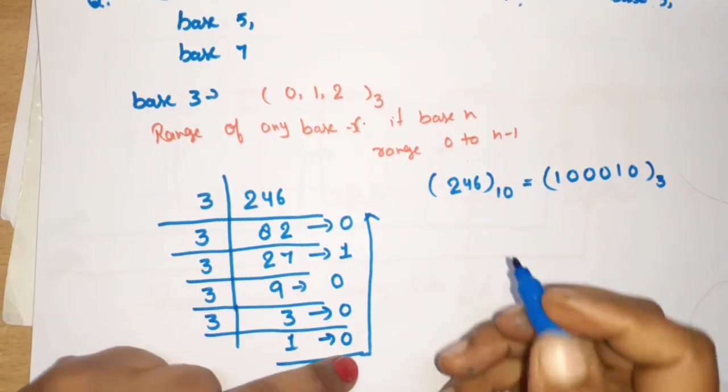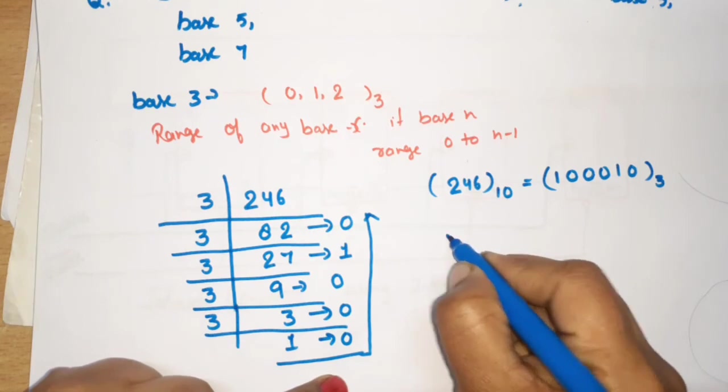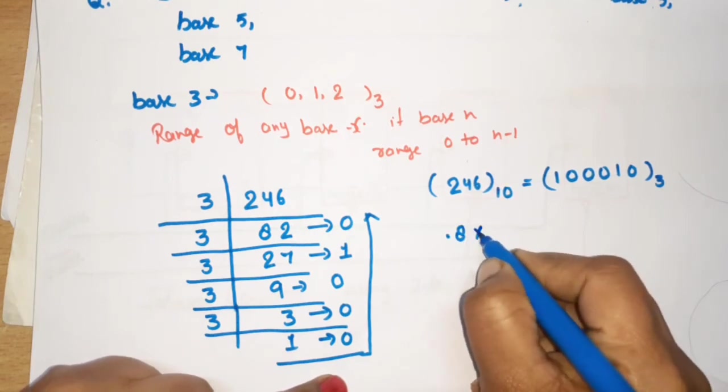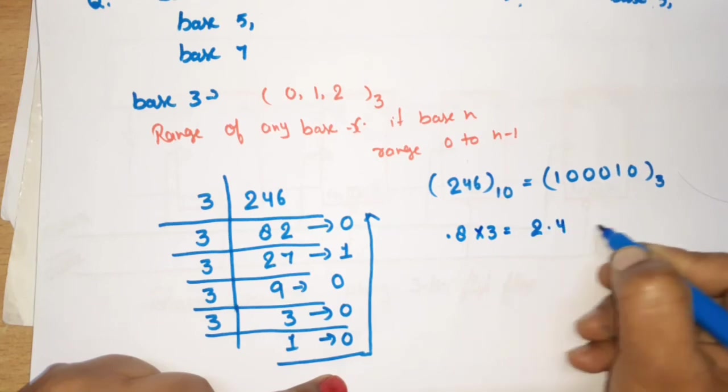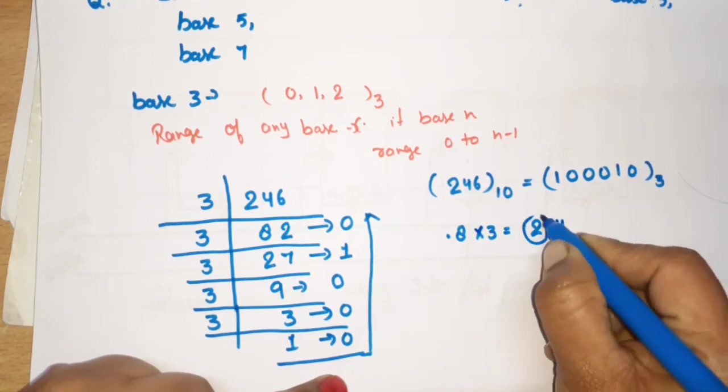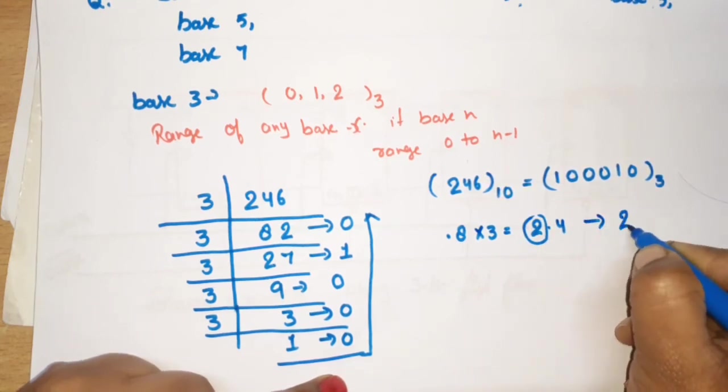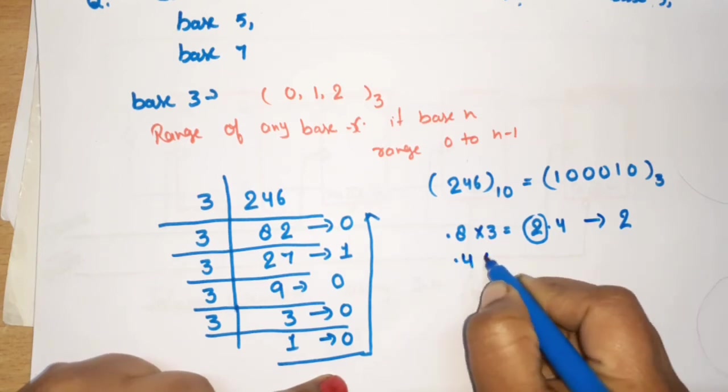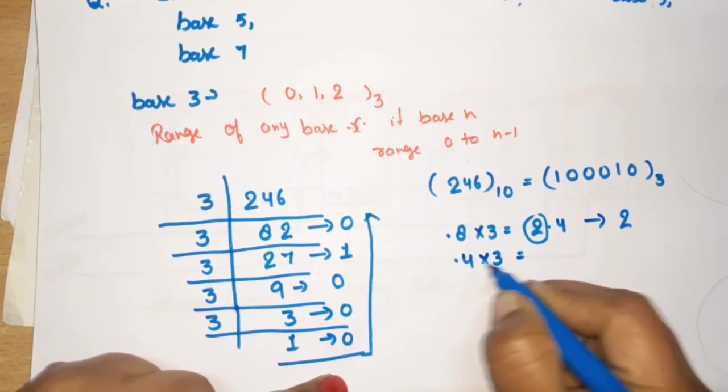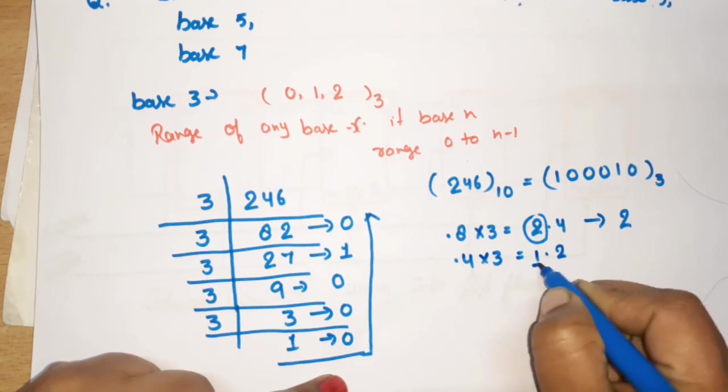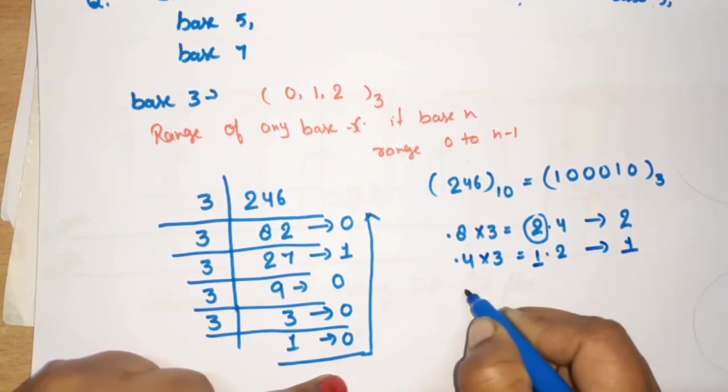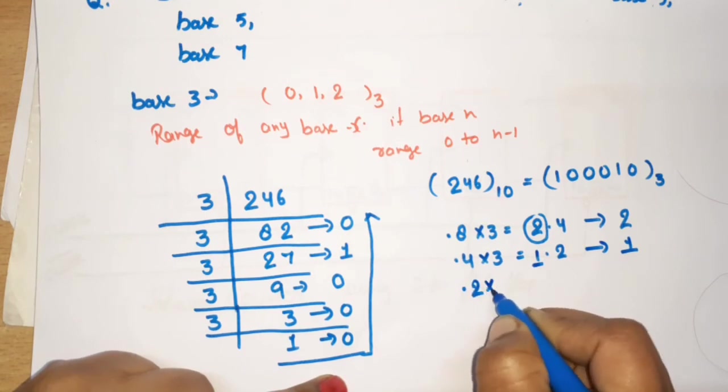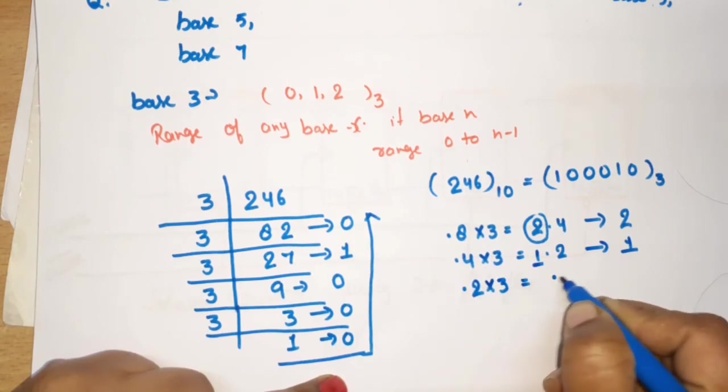Now, friction part. Fraction part is 0.8, so multiplied by 3, what will we write? 2.4. Then 0.4 into 3, multiply by 1.2. This integer part, what will we write? Here, 1. Now what will we write in fraction? 0.2 into 3 is equal to 0.6. No integer part means 0.